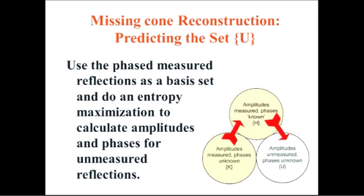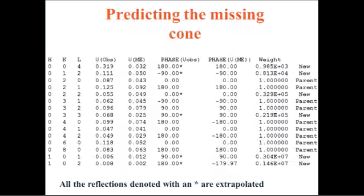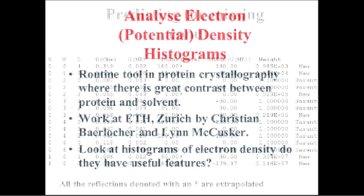If you're an electron diffractionist, there's no reason why this method can't predict the missing cone reflections, or anything that's missing. That's just an example of output, showing that it has actually predicted reflections — the ones with stars. It's actually predicted the observed U magnitude and also a phase angle. Whether they're any use is another matter, of course.